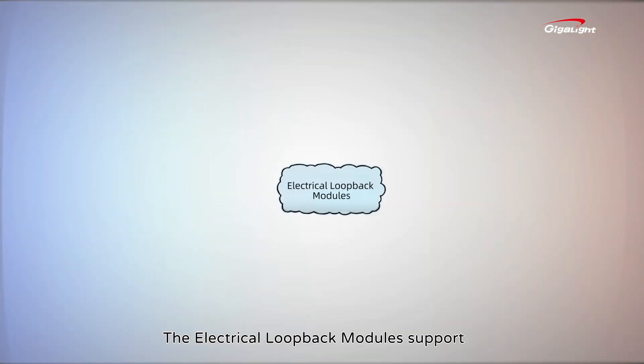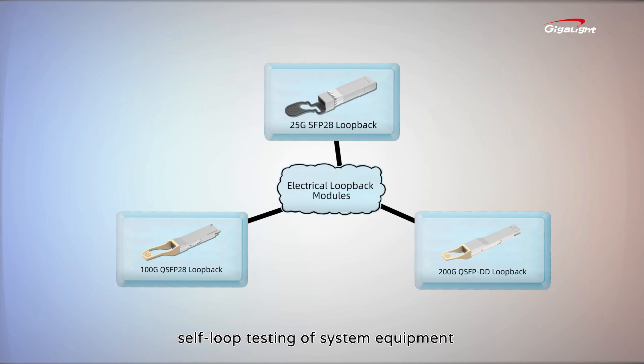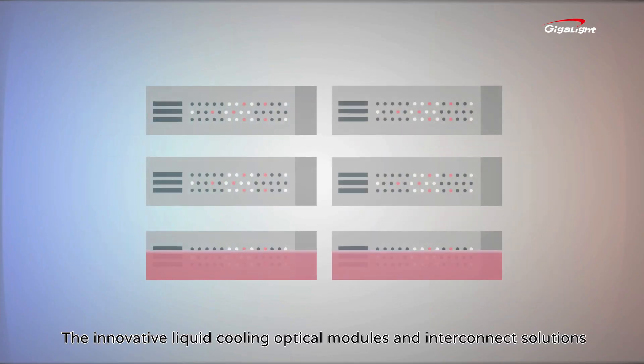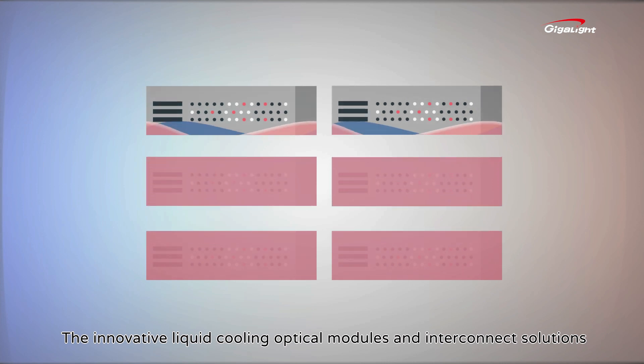The electrical loopback modules support self-loop testing of system equipment. Additionally, Gigalight offers innovative liquid cooling optical modules and interconnect solutions.